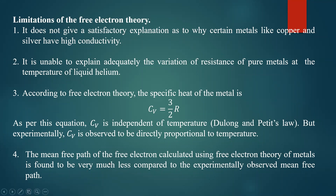Fourth point: the mean free path of the free electron calculated using free electron theory is found to be very much less compared to the experimentally observed mean free path. There is a formula for lambda in terms of thermal conductivity and electrical conductivity, where lambda is mean free path. The value predicted by free electron theory disagrees with experimental observations, so here this free electron theory fails.